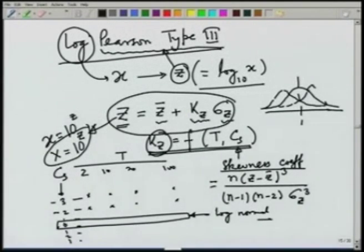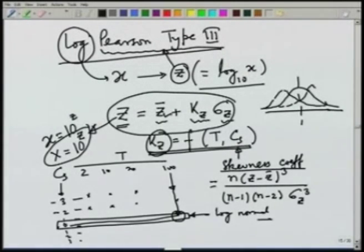Tables are available for K_z as a function of C_s and return period. For example, C_s values of −3, −2, 0, 1, 2, 3 are listed against return periods of 2, 10, 20, 100 years, giving corresponding K_z values. Values at C_s = 0 correspond to the log-normal distribution. Once we find K_z, we compute z, and then x = 10^z to get the design value. These distributions allow us to obtain design values for any return period. We have also reviewed risk, reliability, and safety factors, and in the next few lectures we will look at how to obtain design values for different kinds of structures.